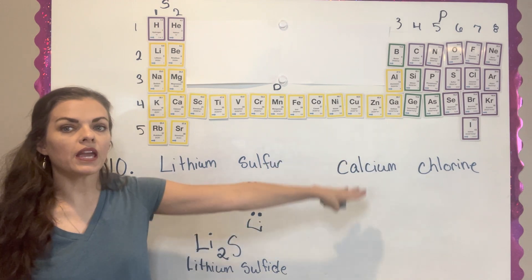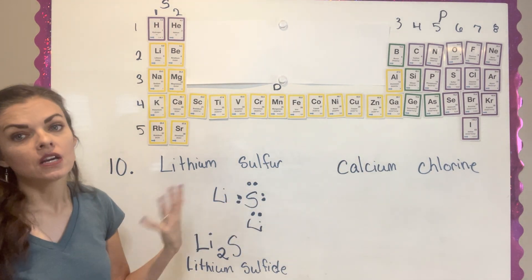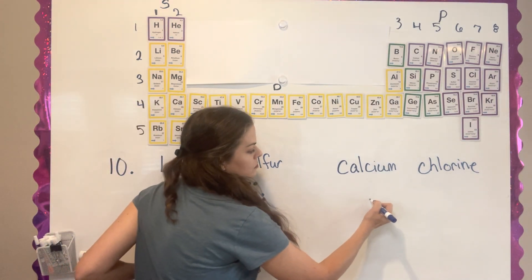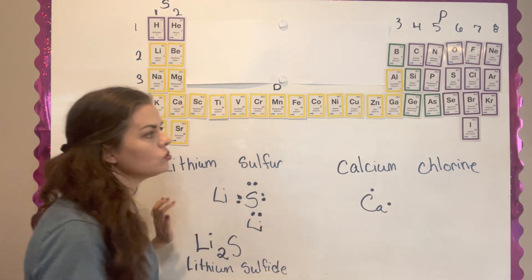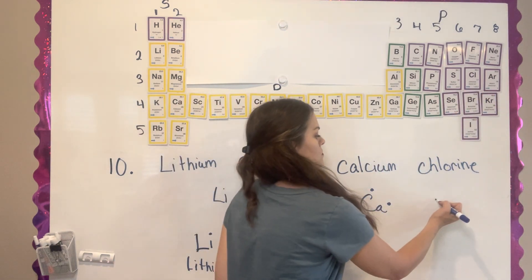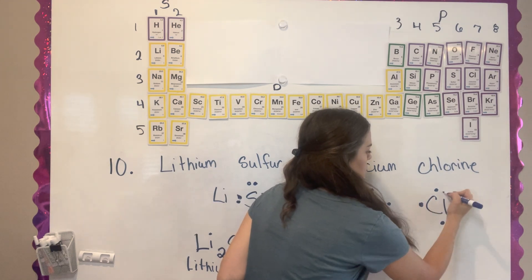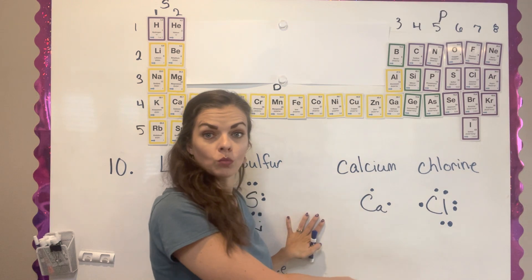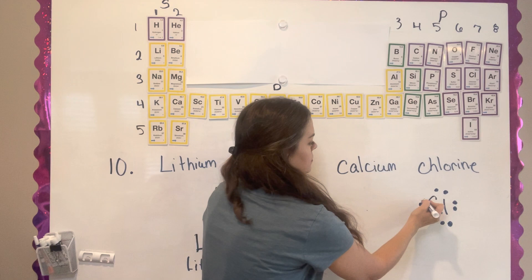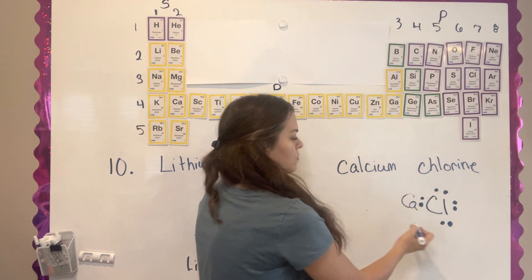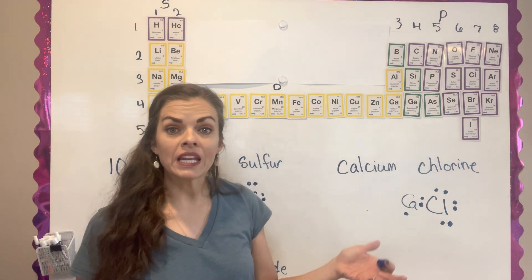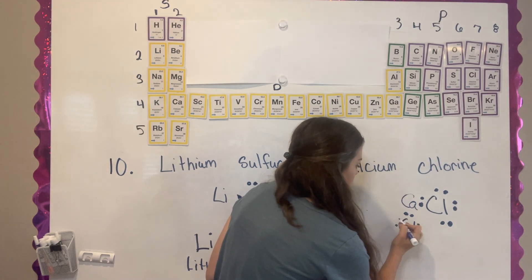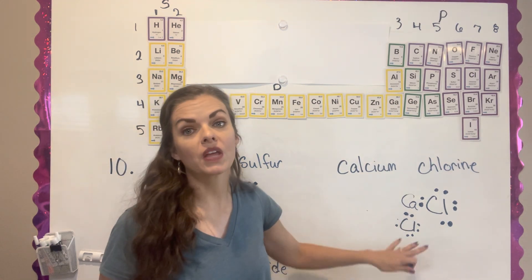For part B of question 10, they give you calcium and chlorine and ask you to write the name and formula. Calcium is in the second column, so it has two valence electrons. Chlorine is all the way down here with seven valence electrons. Chlorine wants one more electron, so calcium is going to share its extra electron with chlorine. But calcium had another electron — so another chlorine can bond with it, and we end up with one calcium and two chlorines.